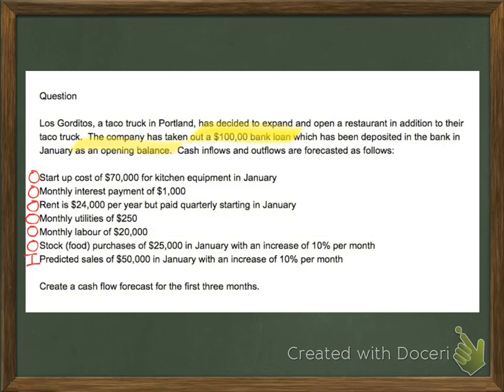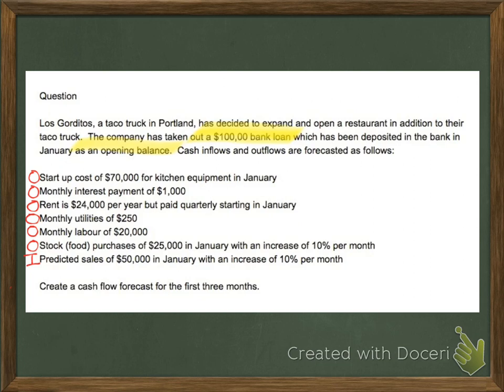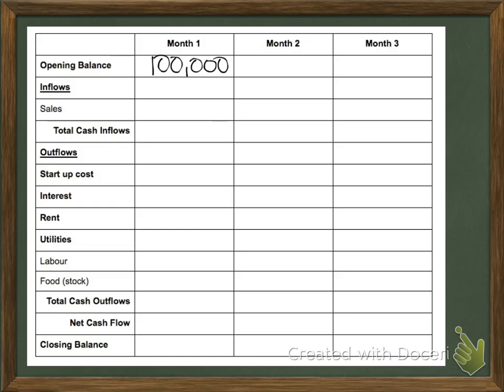Looking at the question, it said $100,000 bank loan for our opening balance at the start, so I'll go ahead and put in $100,000. For inflows, predicted sales are $50,000 in January with an increase of 10% per month. So January is $50,000, and with 10% more that gives me $55,000 for February.